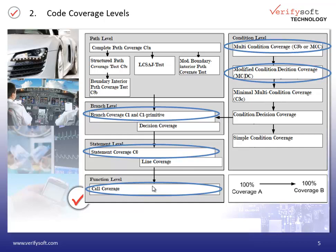A very important coverage level for safety-critical development is MCDC coverage. MCDC stands for Modified Condition Decision Coverage. Every point of entry and exit in the program has been invoked at least once. Every condition in a decision in the program has taken on all possible outcomes at least once. And each condition has been shown to affect that decision outcome independently.